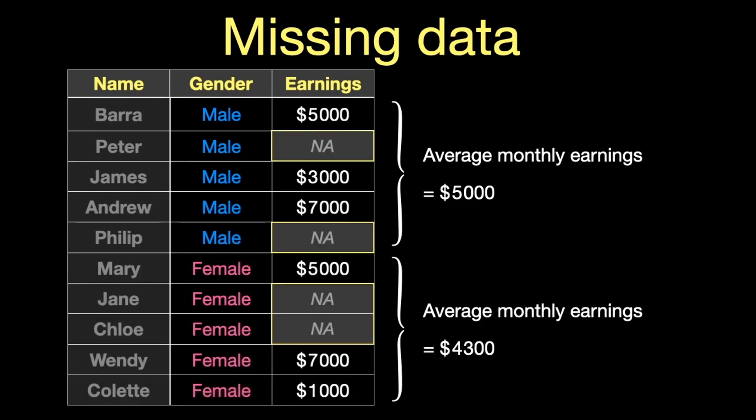Now let's look at the same data set but imagine that there is some missing data — or NA — and in this example imagine that the distribution of the missing data is random. You can see that the average earning, or the difference between men and women, hasn't changed much, and this is because the missingness is random — the missing data is evenly distributed between these two groups.